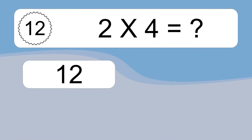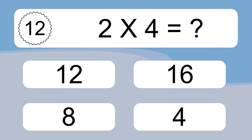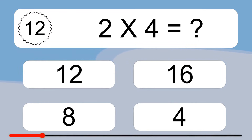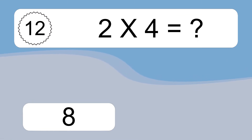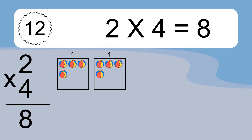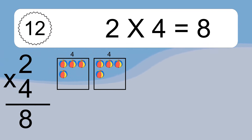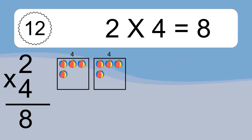2 times 4 equals what? 2 times 4 equals 8. We have 2 boxes, and each box has 4 colorful balls inside. If you count all the balls in all the boxes together, you will have 2 times 4 balls. This equals 8 balls.